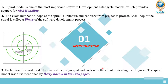The third point says that this model was proposed by Barry Boehm in his paper in 1986. He was the first scientist who gave a proposal about the spiral model. Each phase in the spiral model begins with a design goal and ends with the client review and progress. This is the introduction part of the spiral model.